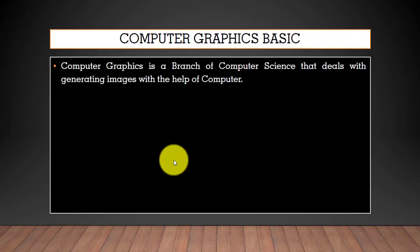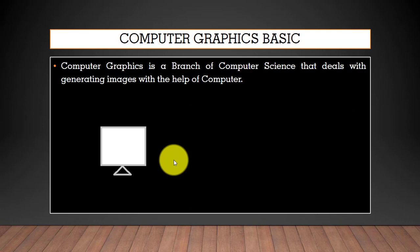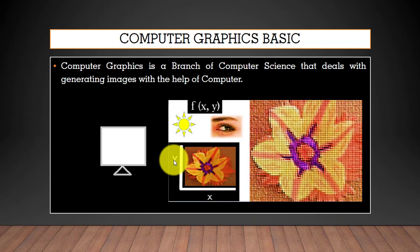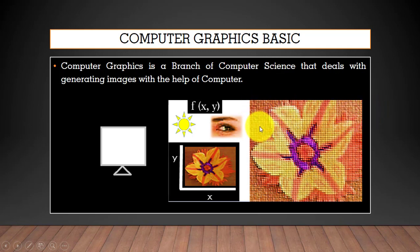Computer graphics is a branch of computer science that deals with generating images with the help of a computer. We use a computer to generate digital images. A digital image is a collection of pixels. A pixel is the smallest element of a digital image — you can see these small rectangles on screen; those are pixels.